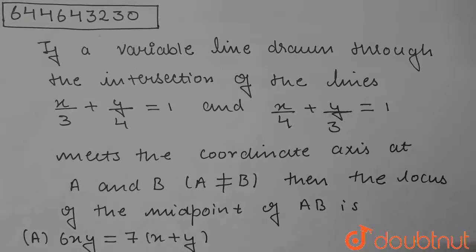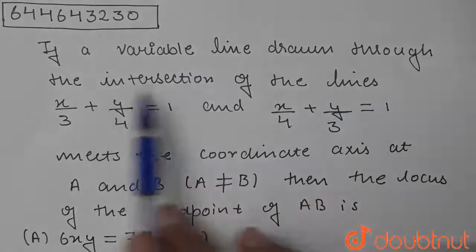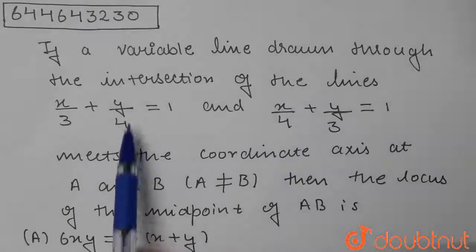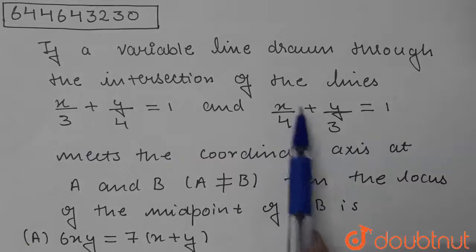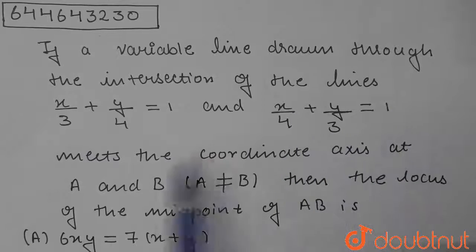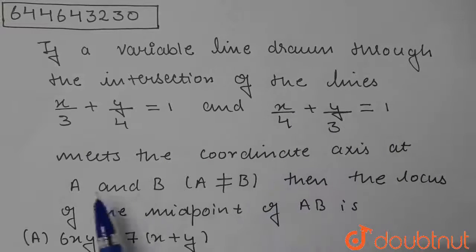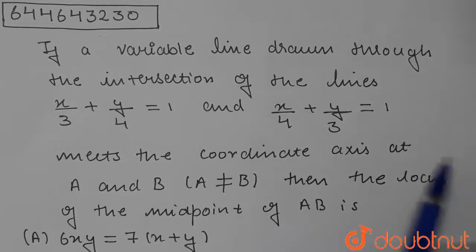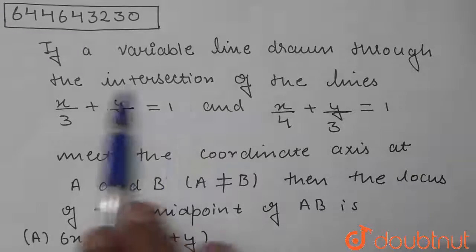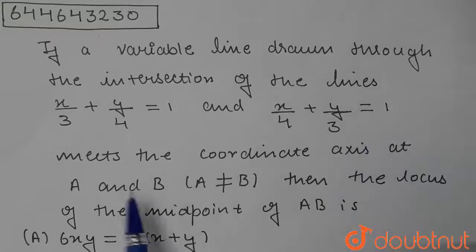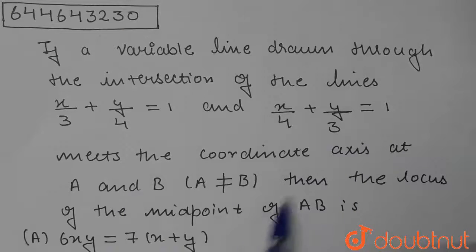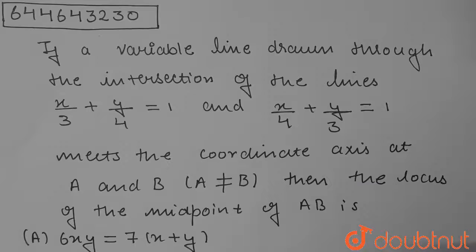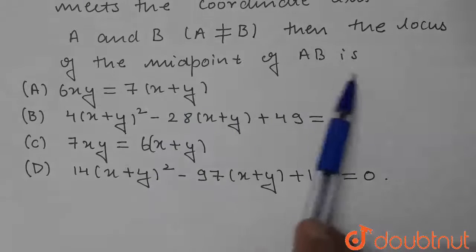Hello students. Today's question is: if a variable line drawn through the intersection of the lines x/3 + y/4 = 1 and x/4 + y/3 = 1 meets the coordinate axes at A and B, and A is not equal to B, then find the locus of the midpoint of AB.